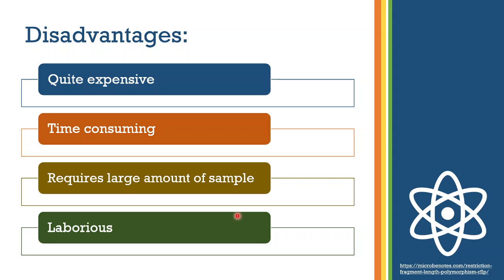RFLP analysis isn't very sensitive and requires a large amount of DNA samples. Thus, when it comes to microbial taxonomy, we would first have to culture the organism. And as we know, some organisms are fastidious, so it can be a little tough. And since we have to extract such a large amount of DNA, it becomes quite laborious as well.